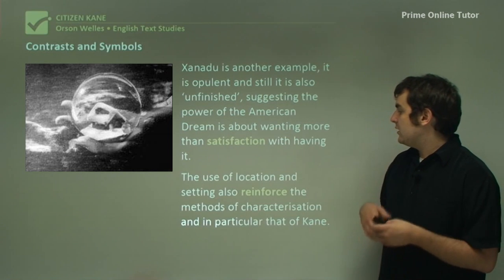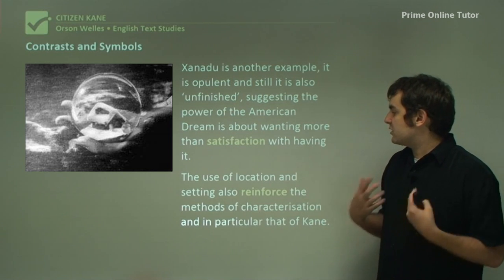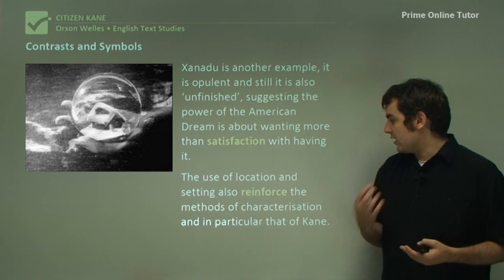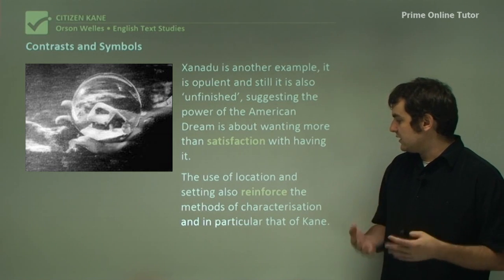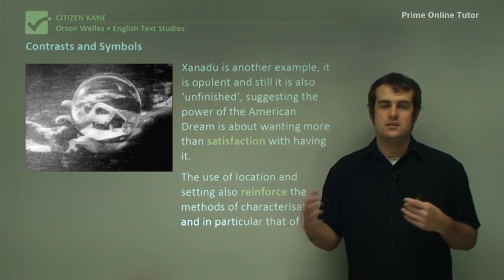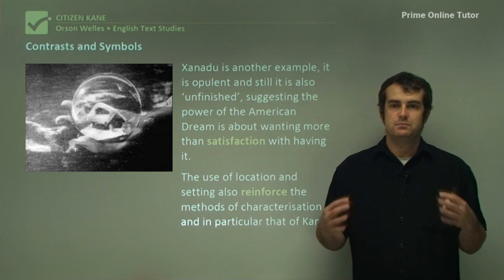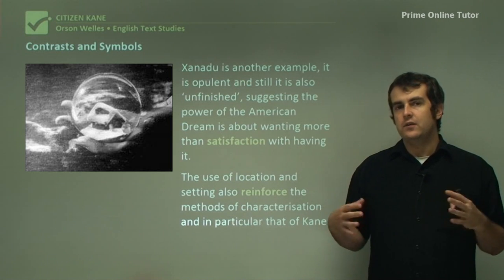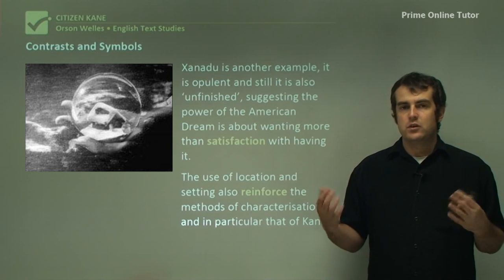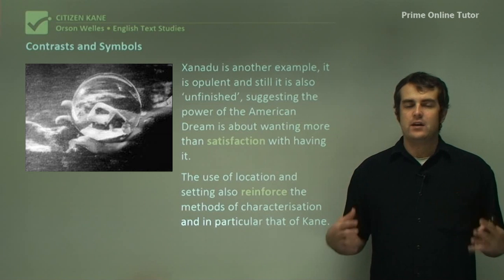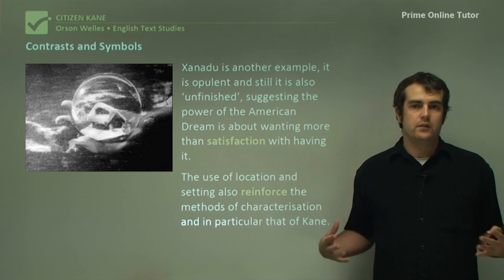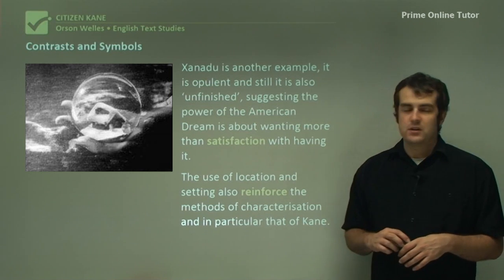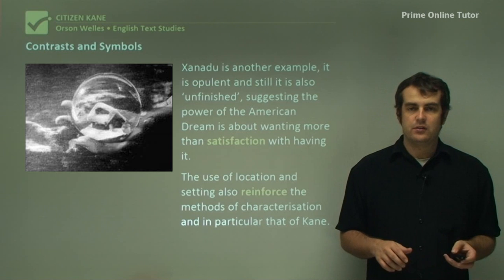The use of location and setting reinforces this characterization of Kane. The house represents his character: this big, grand, over-the-top husk filled with nothing inside — nothing of value, nothing of worth. It reflects Kane's character as much as anything else.